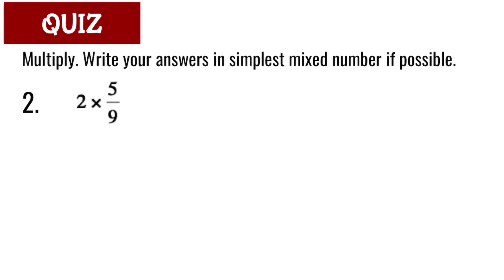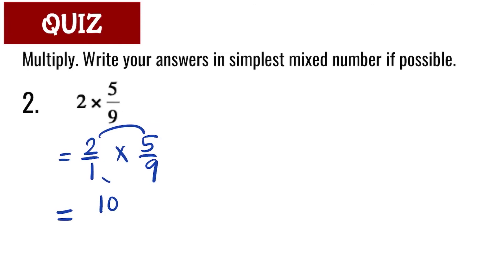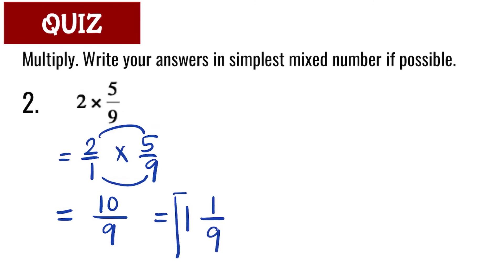Question number 2: 2 times 5 over 9, which is the same as 2 over 1 times 5 over 9. Step 1, multiply numerators 2 and 5 — that's 10. Step 2, multiply denominators 1 and 9 — that's 9. Since 10 over 9 is an improper fraction, we convert it: how many 9s go into 10? 1 time — remainder 1. The simplest form is 1 and 1 ninth.